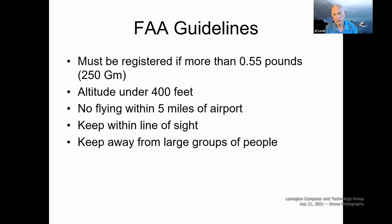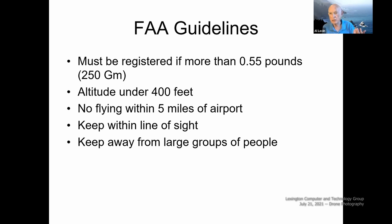The FAA tells us to keep our drones within line of sight — more easily said than done. My drone has a range of five miles, but I don't go more than half a mile to a mile at most. Even at half a mile, I can't always keep the drone in line of sight. And there are obvious safety issues: you want to avoid large crowds or heavily trafficked highways.